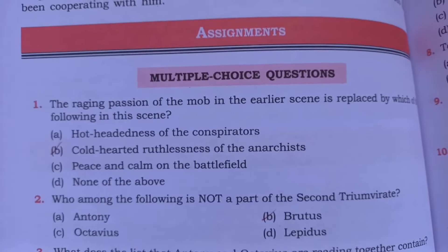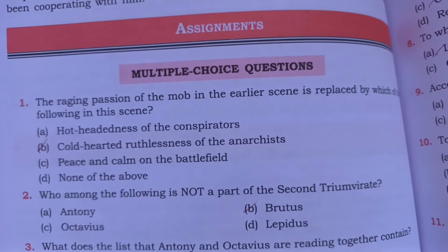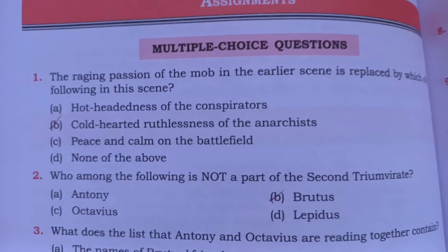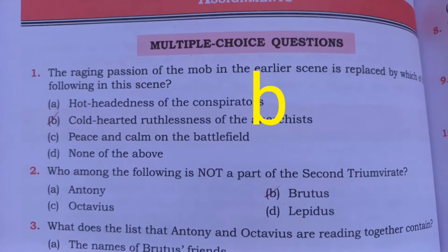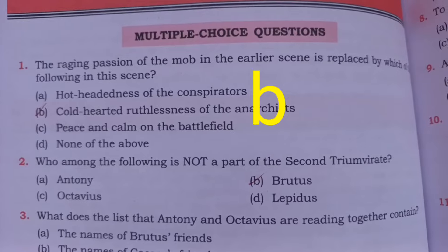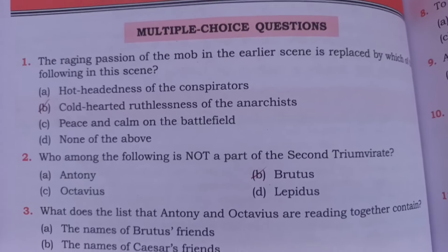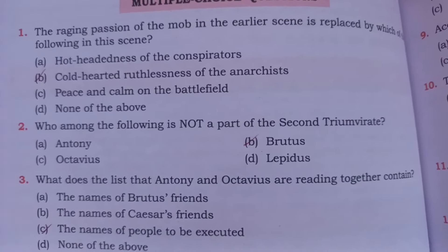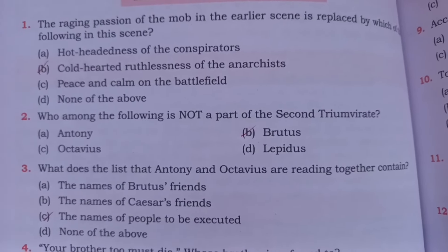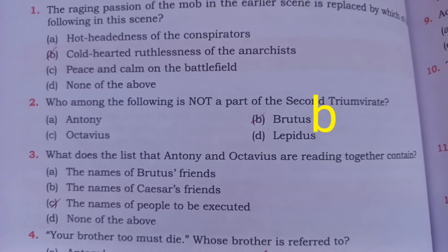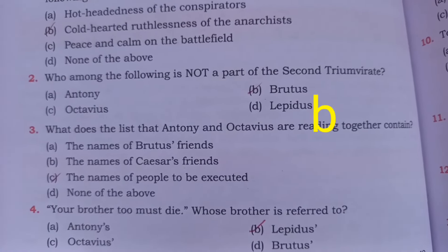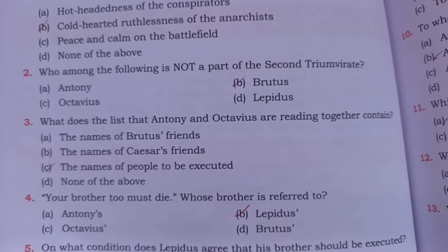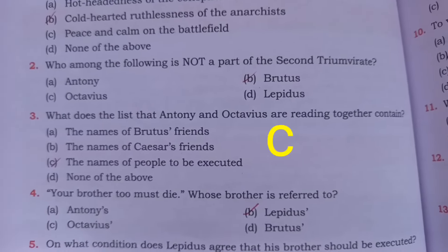Question one: the raging passion of the mob in the earliest scene is replaced by which of the following in this scene? Option B is correct: cold-hearted ruthlessness of the anarchists. Question two: who among the following is not a part of the second triumvirate? Option B is correct. Question three: what does the list that Anthony and Octavius are reading together contain? Option C is correct.